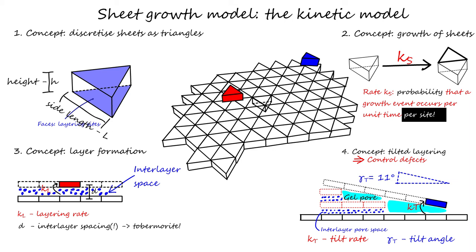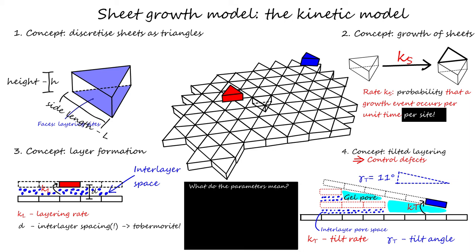Before we carry on, we consider for a moment the meaning of these parameters. The ratio between KL and KS controls the aspect ratio of the growing packs of aligned sheets. If Ks over KL is large, which means that the sheet growth is much faster than layering, one obtains sheet-like discs with small number of layer repetitions. If it is small, in contrast, one obtains more cylindrical needles. The ratio between the layering and the tilt growth rates, KL over KT, controls the number of defects in the sample. If KL over KT is large, layering is much faster than tilt, leading to ordered structures with greater repetition number of layers. If KL over KT is small, one creates more gel pores and more disorder, leading to smaller repetition numbers of layers.